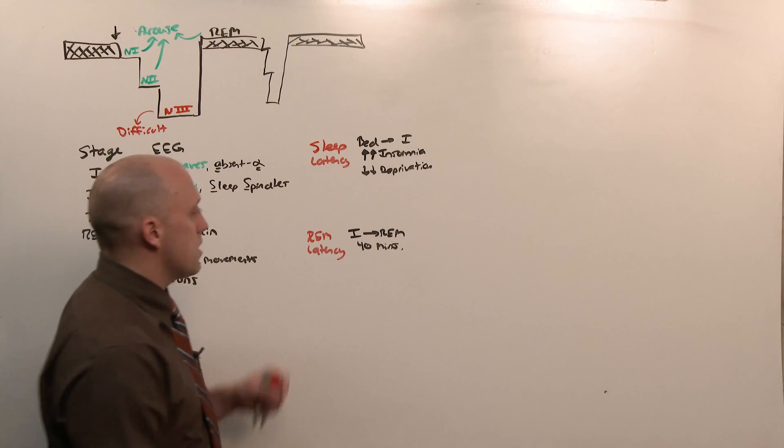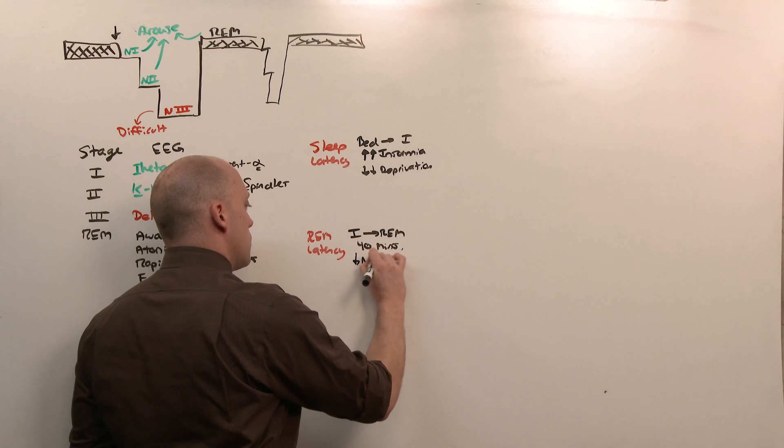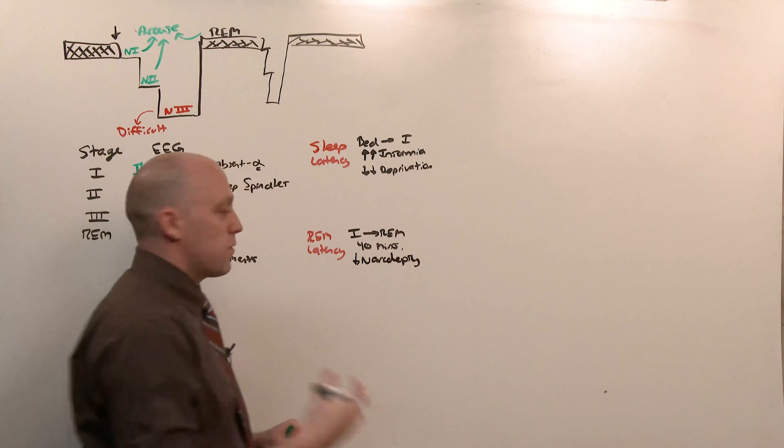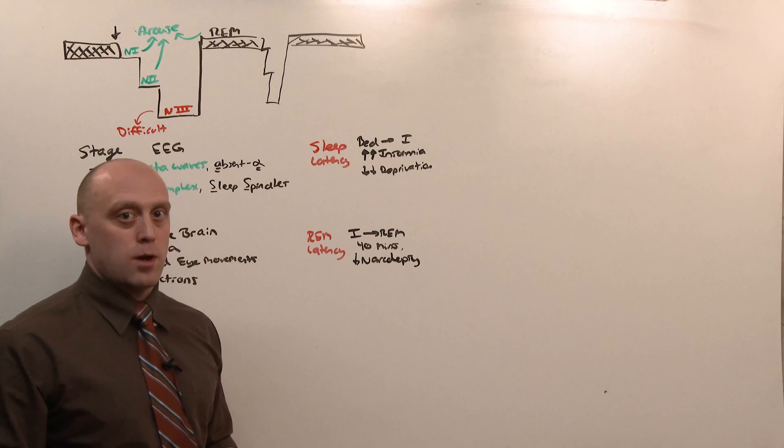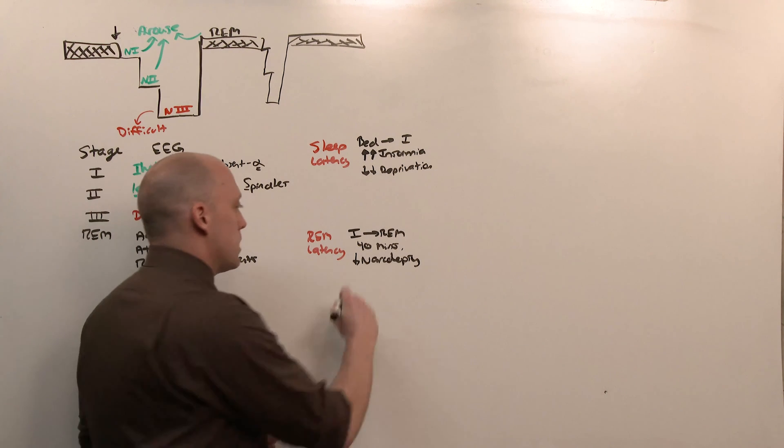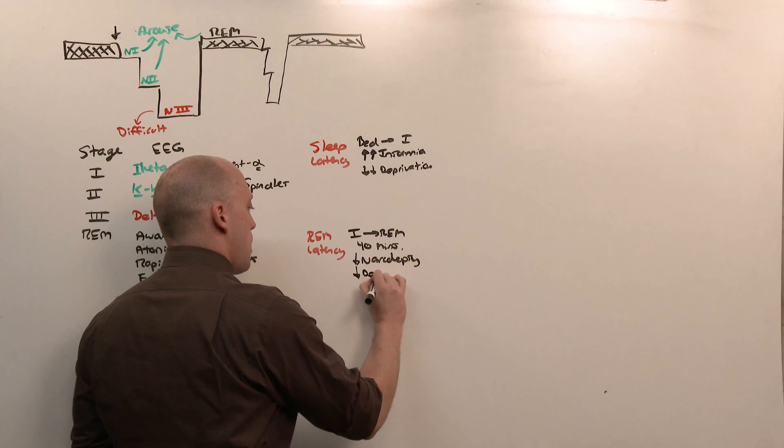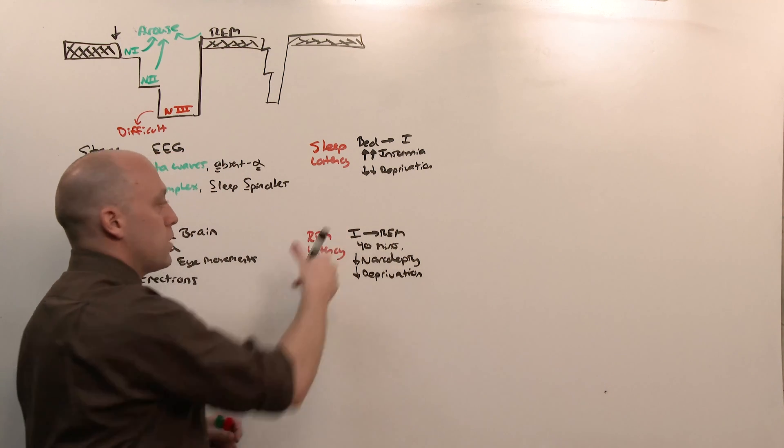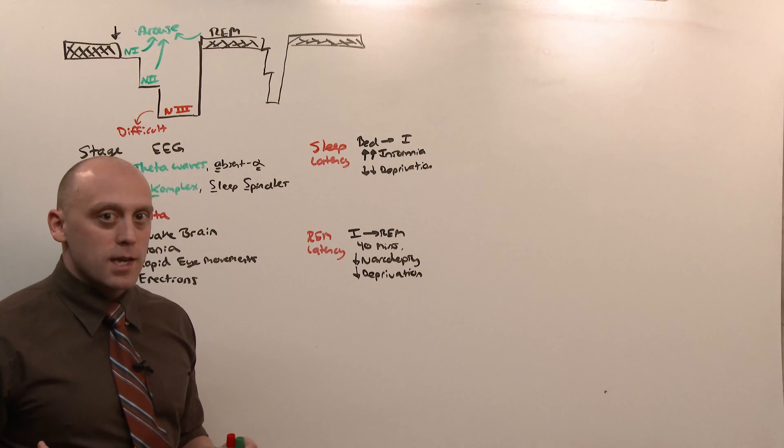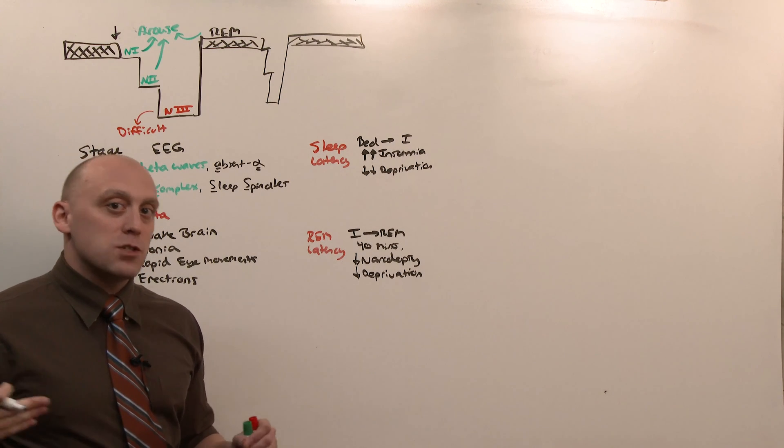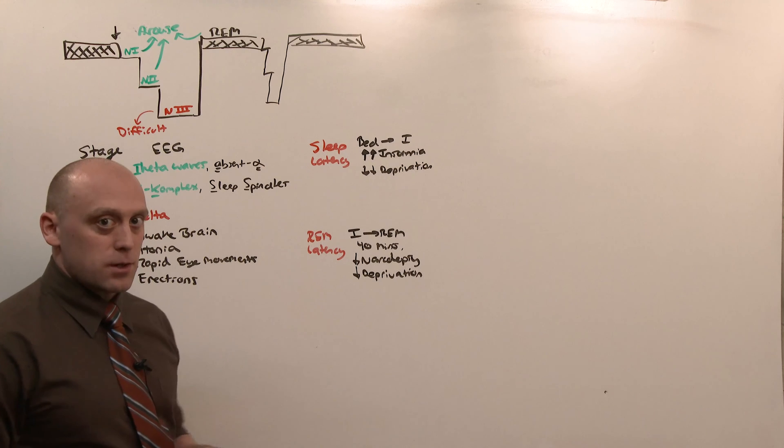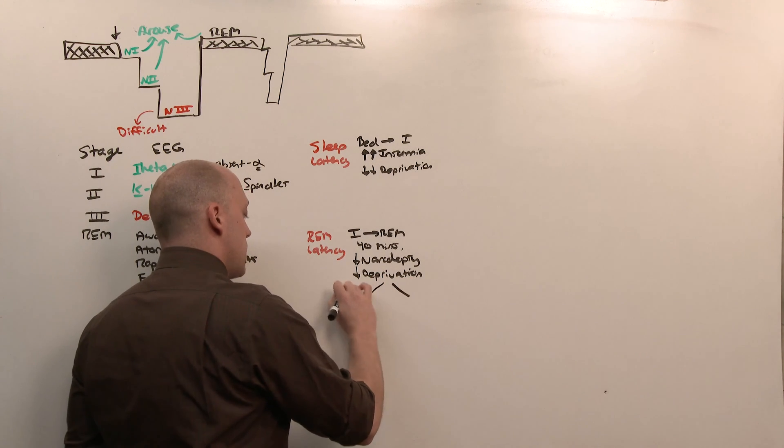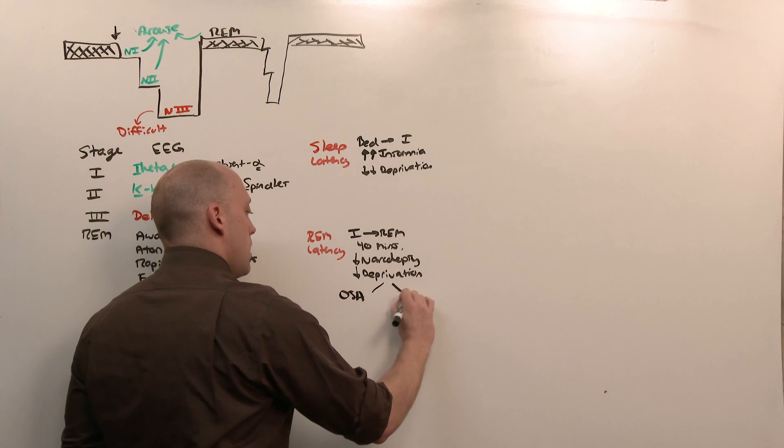REM latency is going to be decreased in narcolepsy. We'll discuss narcolepsy in the next lesson, but you'll see they have complete loss of tone and they jump right into REM. It's also decreased in sleep deprivation or REM deprivation. Body needs sleep, body needs REM. If you take sleep or REM away, the body's going to be able to get to sleep and into REM faster. REM deprivation can occur in two major disease states: obstructive sleep apnea and alcohol use.